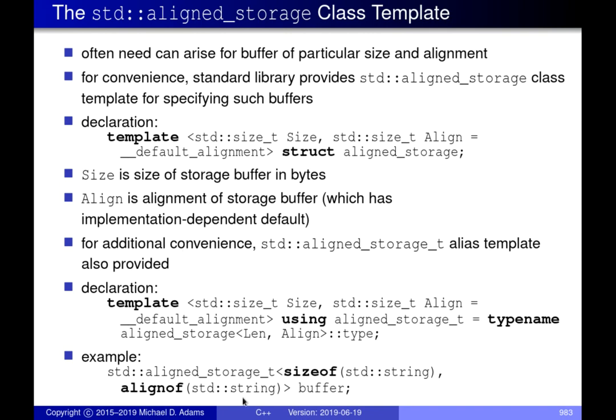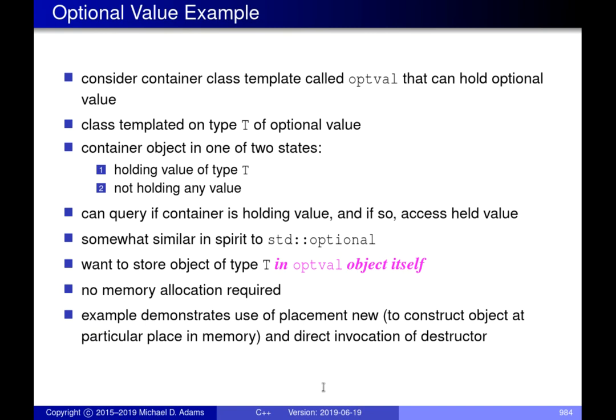For example, if we wanted to create a buffer in memory with size equal to `sizeof(std::string)` and alignment equal to the alignment of `std::string`, the first parameter passed is the size of the chunk of storage and the second parameter is the alignment. This would give us a chunk of memory guaranteed to be the right size and alignment for a `std::string`. With that said, I want to get into some code examples.